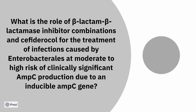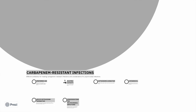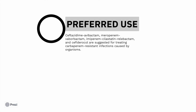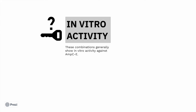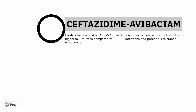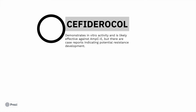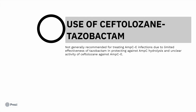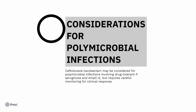Next is the role of beta-lactam/beta-lactamase inhibitor combinations in these infections. The preferred agents are ceftazidime-avibactam and meropenem-vaborbactam, which can be used especially if there is carbapenem resistance. Ceftazidime-avibactam has in vitro activity and is likely to be effective against AMP-C, with some concerns about slight failure rates compared to ESBLs. Cefiderocol also has good in vitro activity against AMP-C, though there are some case reports showing resistance. Ceftolozane-tazobactam is not considered given the weakness of tazobactam, but may be considered in the setting of polymicrobial infections, similar to ESBL management.